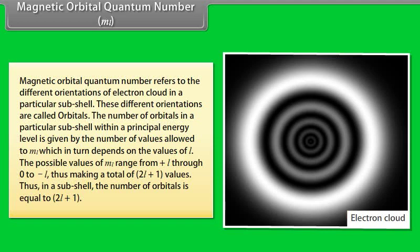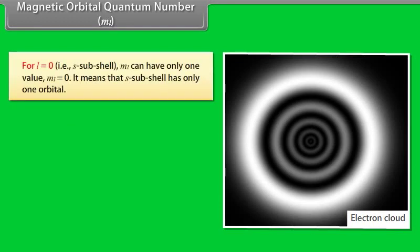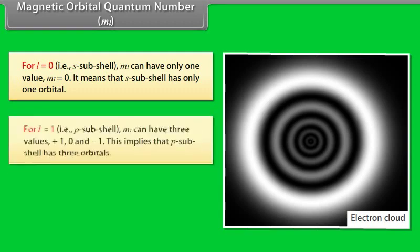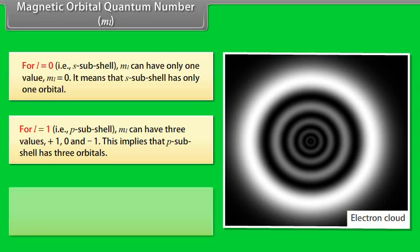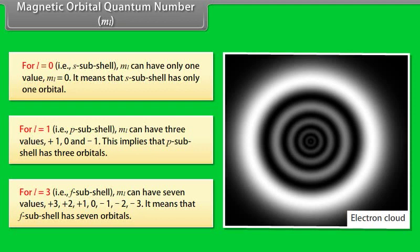The Magnetic Orbital Quantum Number ML refers to the different orientations of the electron cloud in a particular subshell. These different orientations are called orbitals. The number of orbitals in a subshell is given by the number of values of ML, which depends on L. The possible values of ML range from +L through 0 to −L, making a total of 2L + 1 values. For L = 0, ML = 0 (one orbital). For L = 1, ML = +1, 0, −1 (three orbitals in P subshell). For L = 3, ML = +3, +2, +1, 0, −1, −2, −3 (seven orbitals in F subshell).